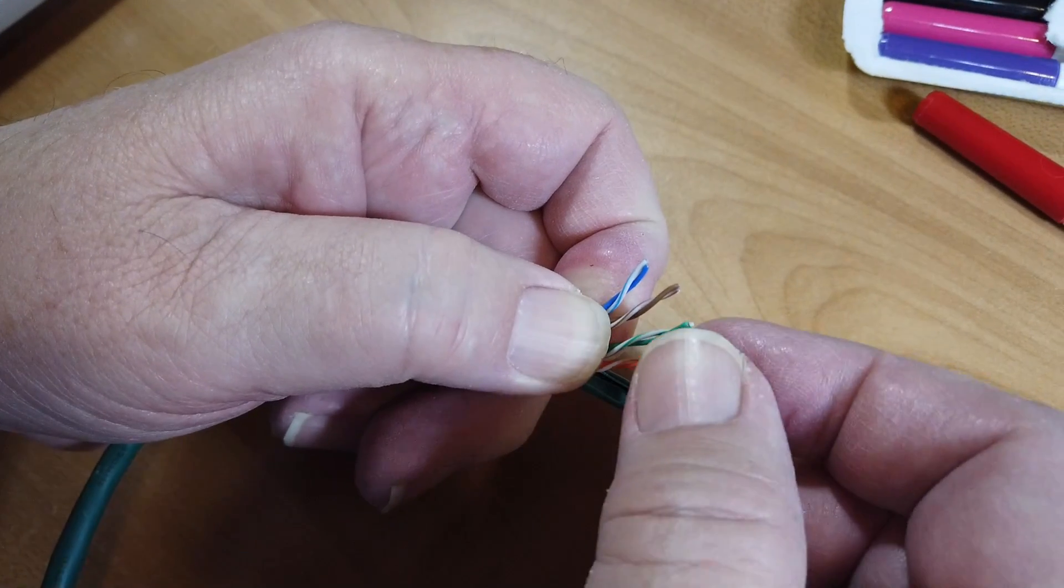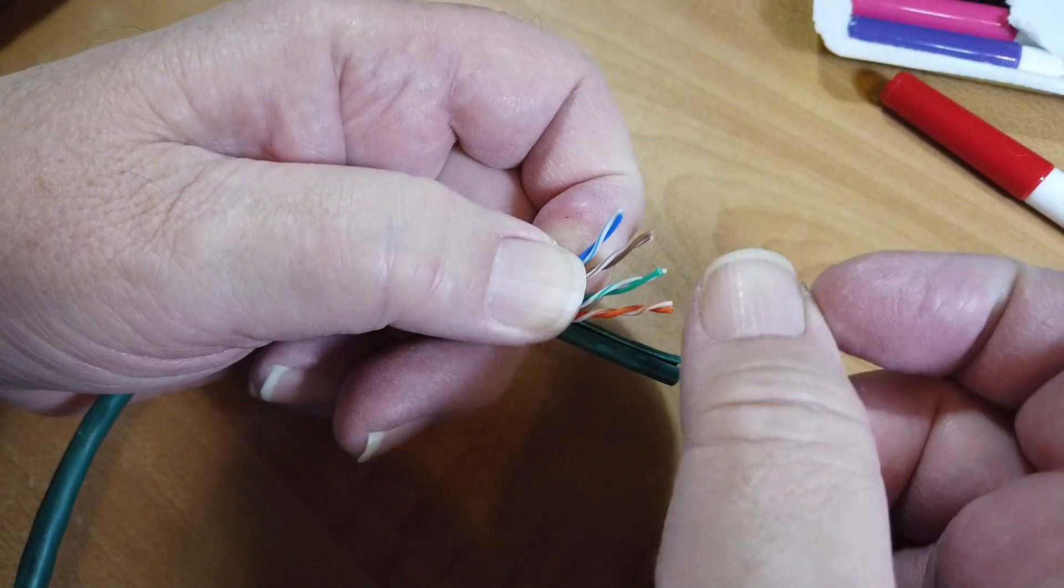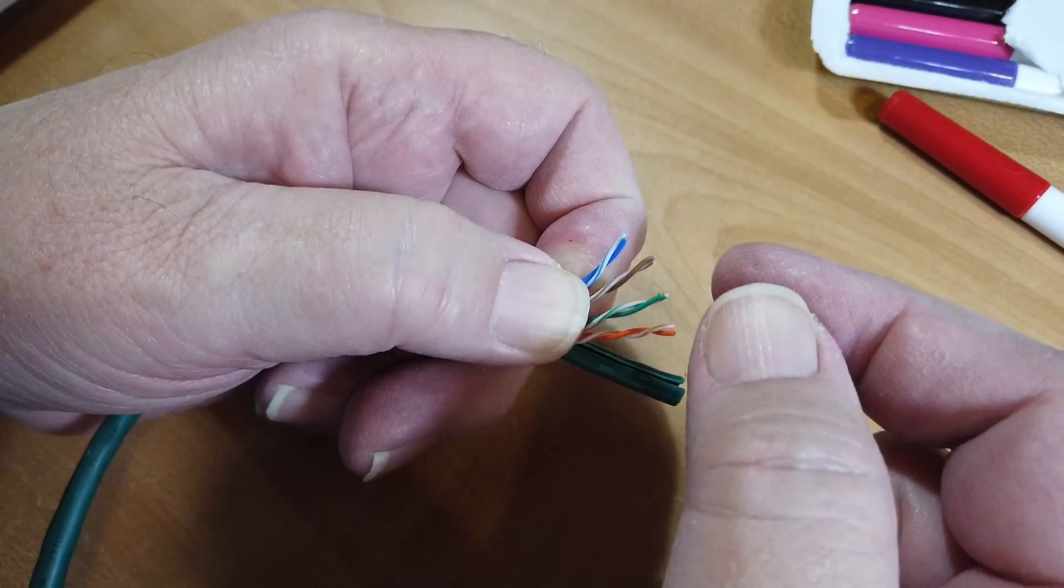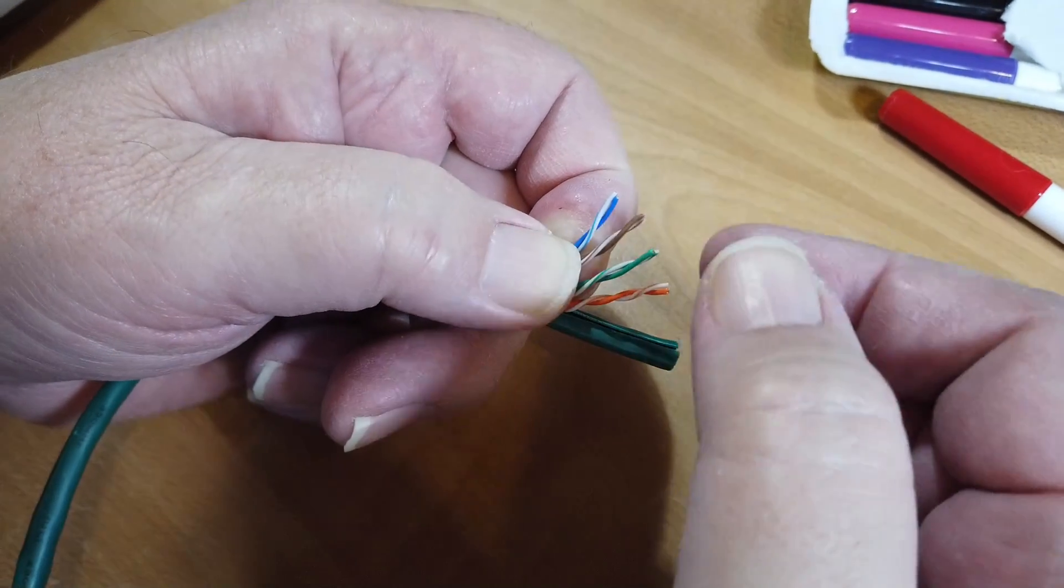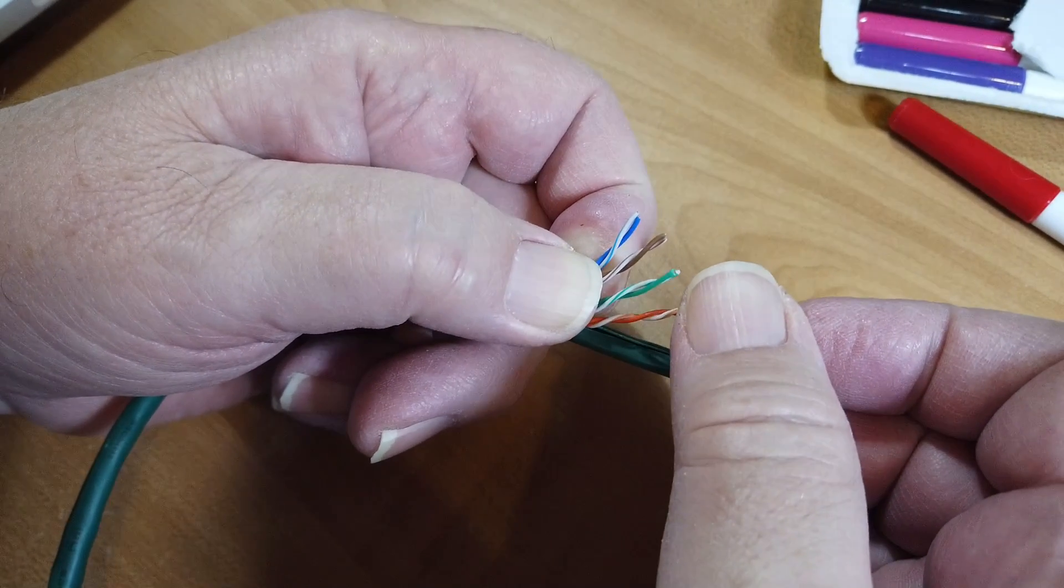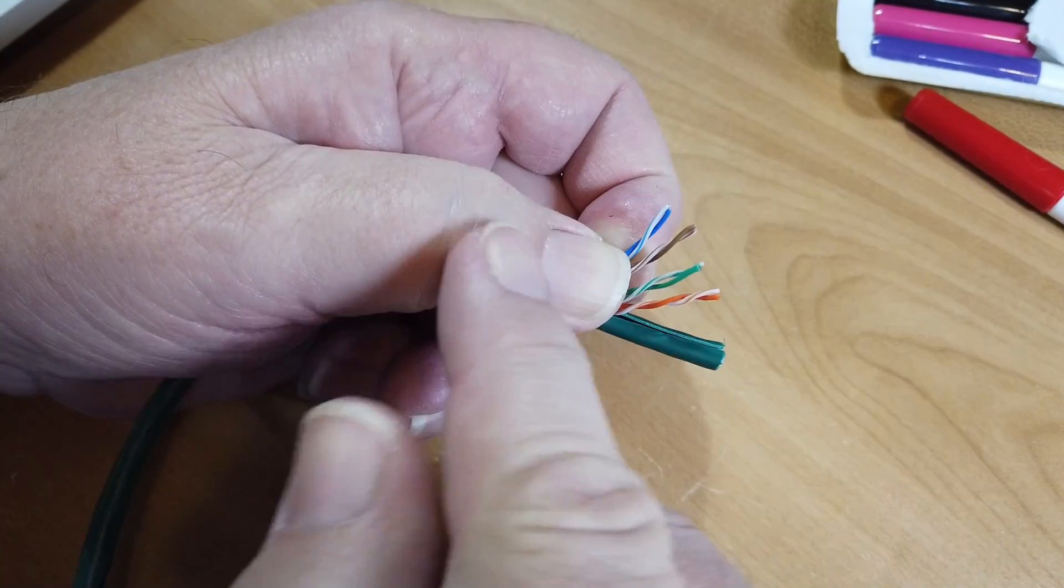Okay, two pair are not used, and it depends on how you wire these things, which two pair that is. But two pair are used. This, and I'm picking these arbitrarily. This one is for signals running out. This is for signals coming back.